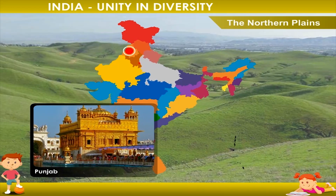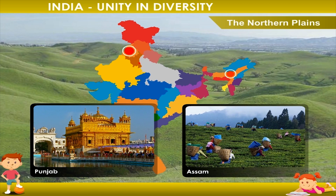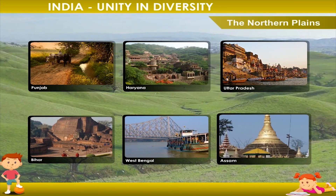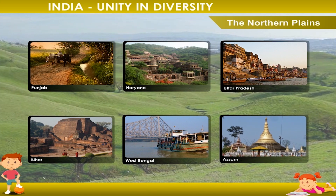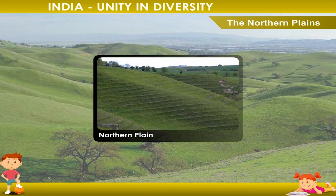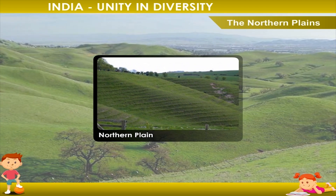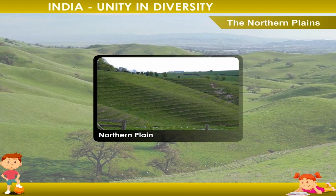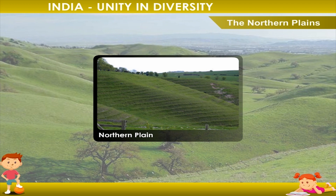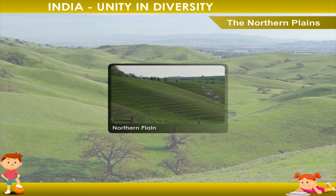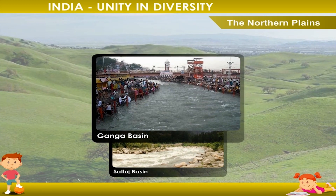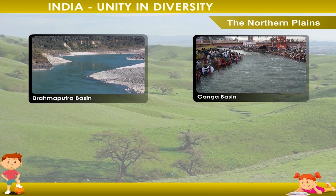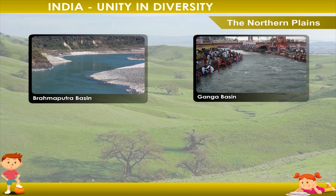The Northern Plain lies to the south of the Himalayan mountains. It starts from Punjab in the west to Assam in the east. The states of Punjab, Haryana, Uttar Pradesh, Bihar, West Bengal and parts of Assam lie in the northern plain. The three main rivers divide it into three river basins: the Satlaj Basin, the Ganga Basin, and the Brahmaputra Basin. The Ganga and the Brahmaputra form the biggest delta in the world, called the Sundarbans.